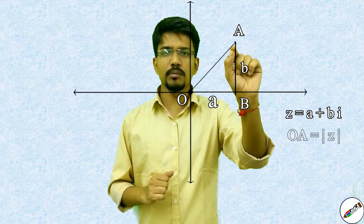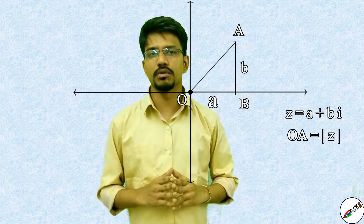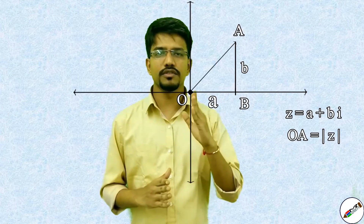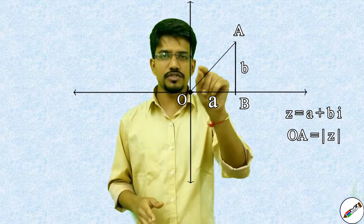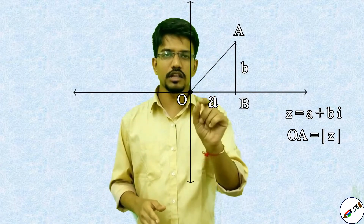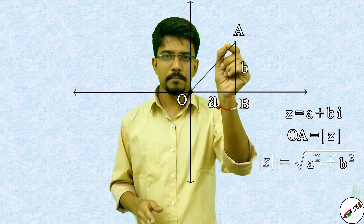Let us call this point A and draw line segment OA. As you can see, line segment OA is the modulus of the complex number, denoted by mod of z. By Pythagoras theorem, mod of z is nothing but the square root of a squared plus b squared.